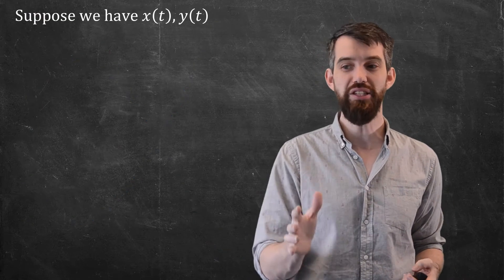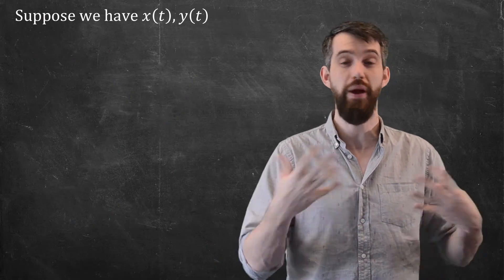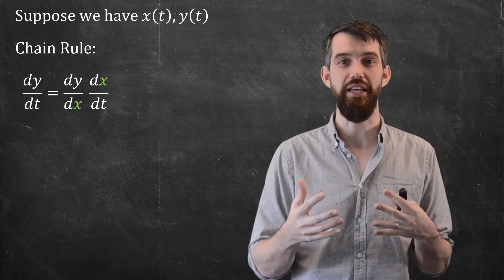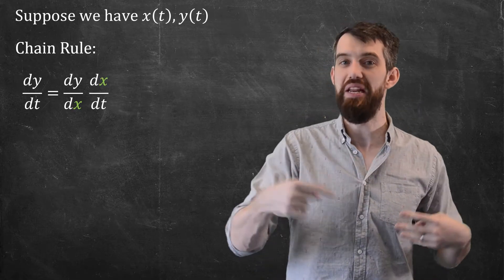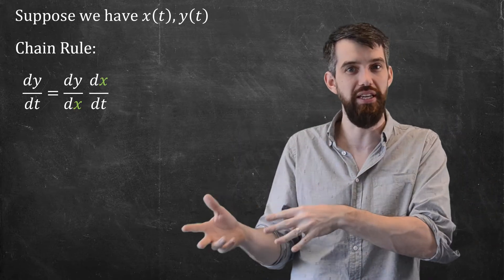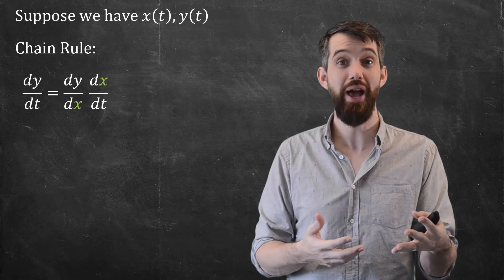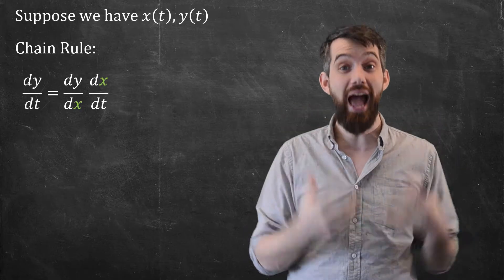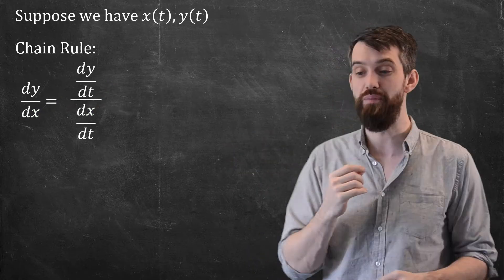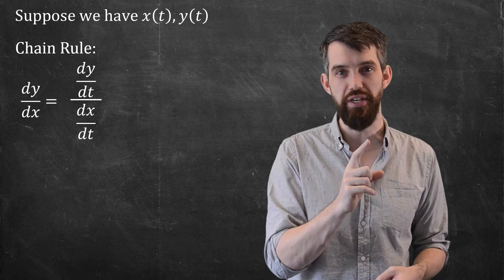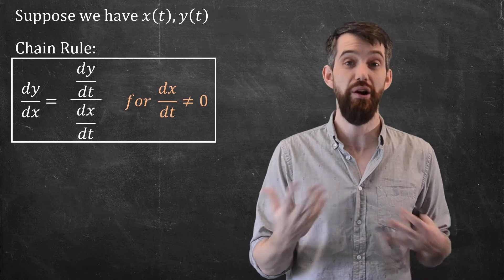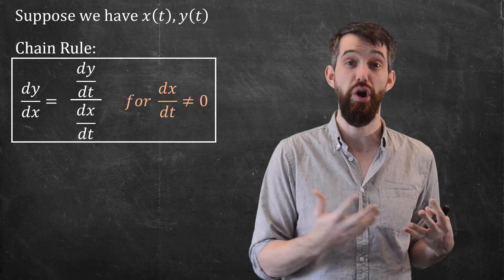Well, let me consider an arbitrary x(t) and y(t), some parametric curve. Now let me consider the chain rule applied to dy/dt. Because x is an intermediate variable here, the y depends on x, but then the x depends itself on t. I can apply the chain rule, and what I get is dy/dx · dx/dt. And if I rearrange this formula, it's going to become dy/dx = (dy/dt)/(dx/dt). At least this is going to be true in the scenario where dx/dt is non-zero.